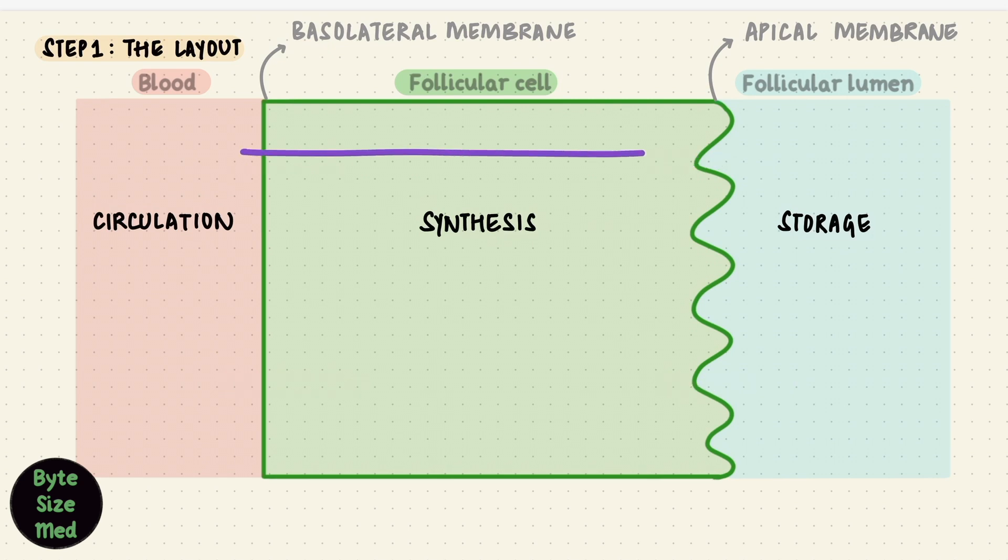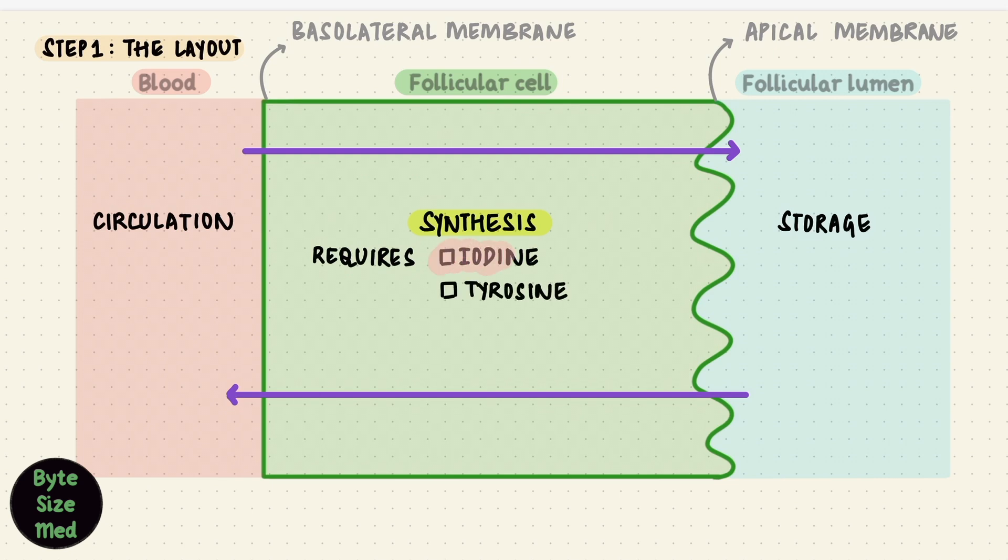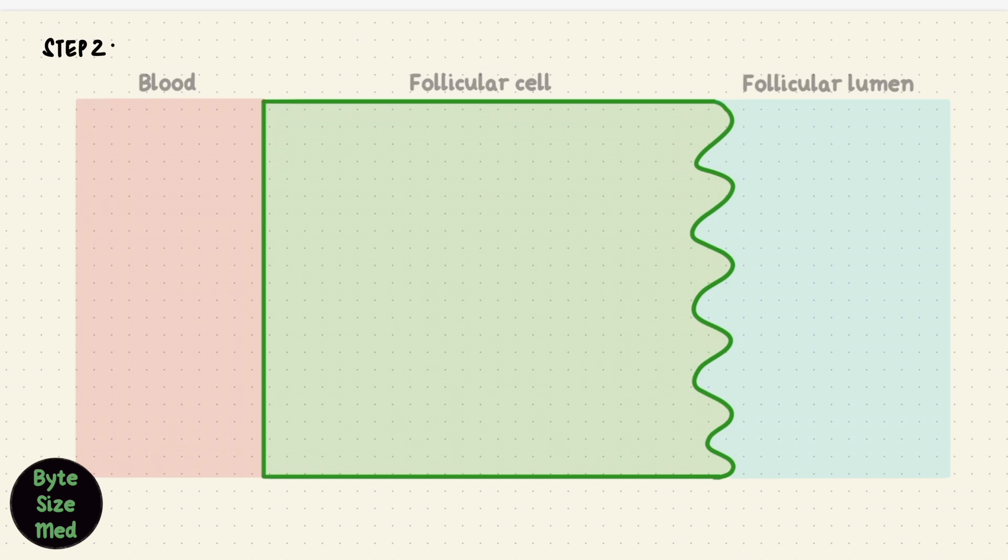So in the first half, we're going to go from the basolateral to the apical membrane. And in the second half, the other way around, from the apical to the basolateral membrane. For it to synthesize the hormones, it needs two things, iodine and tyrosine. Where does the iodine come from?